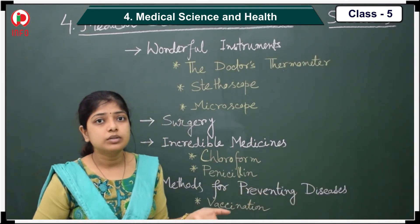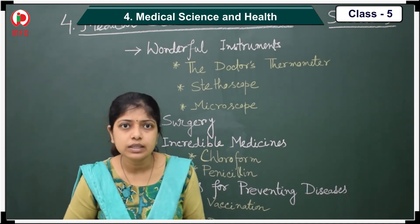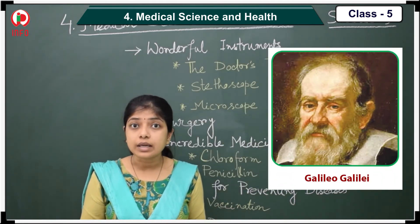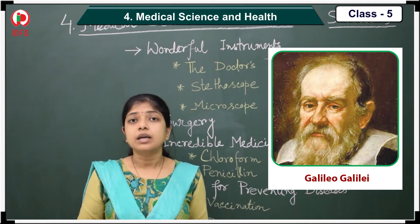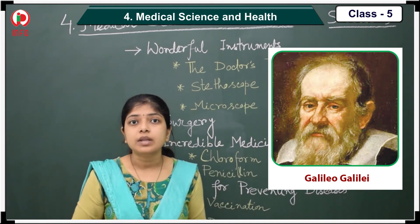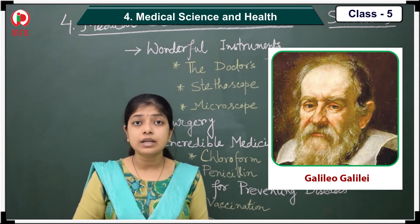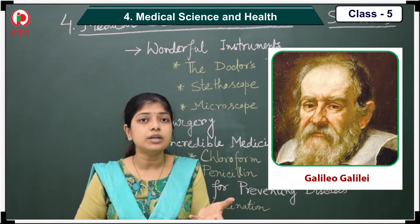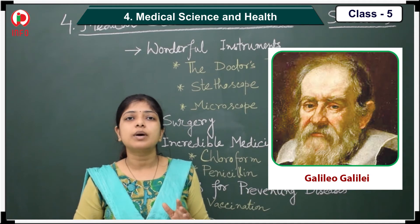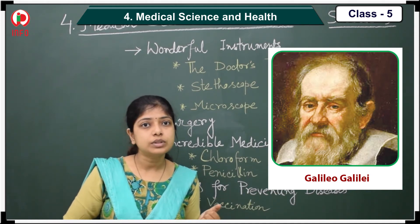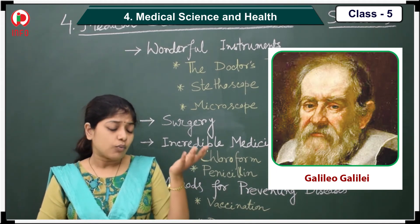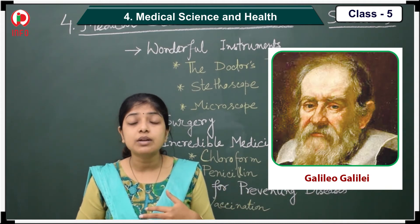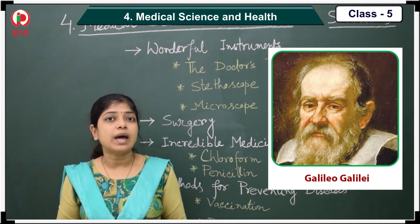We learned about the thermometer, and do you know that the thermometer was first invented by Galileo Galilei? He was an astronomer and he is from Italy. In the year 1593, he invented the thermometer, but the thermometric liquid which he used was water. And Daniel Gabriel Fahrenheit was born in Poland.